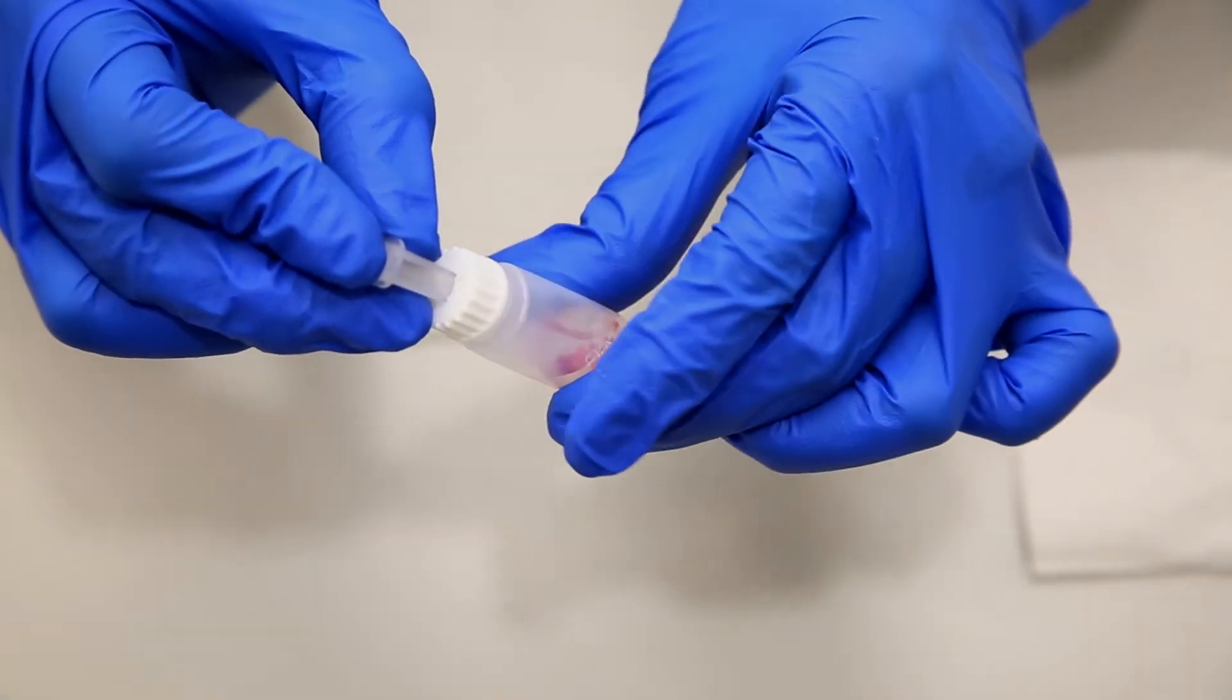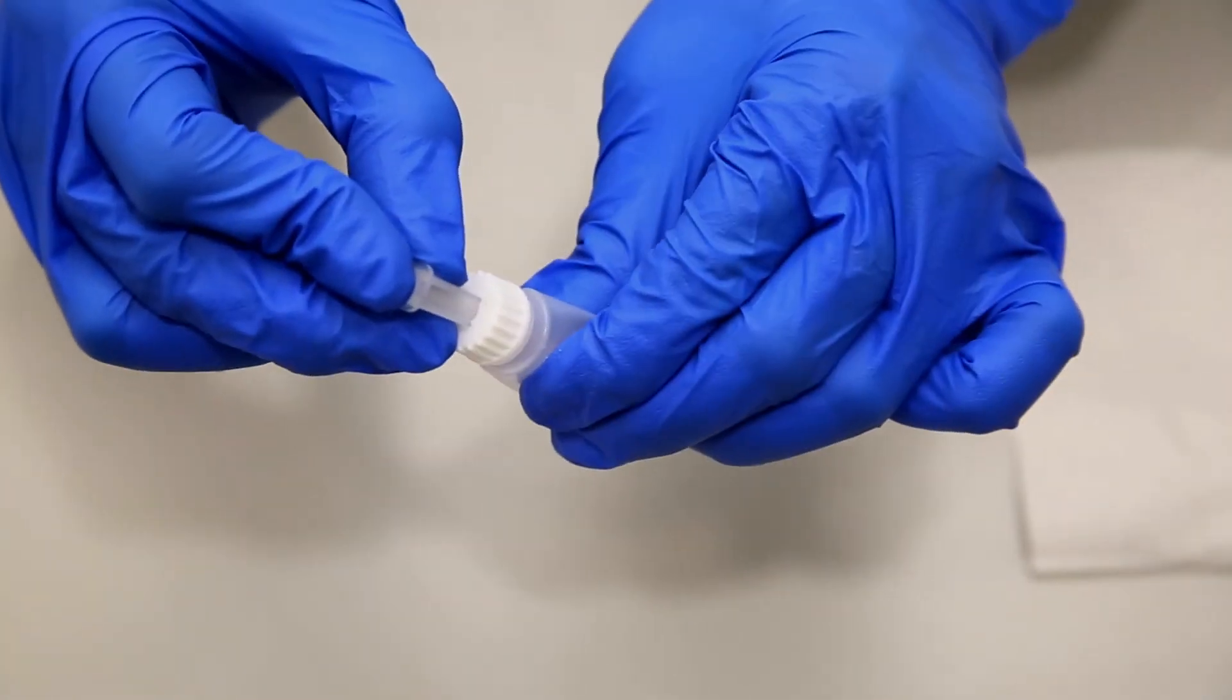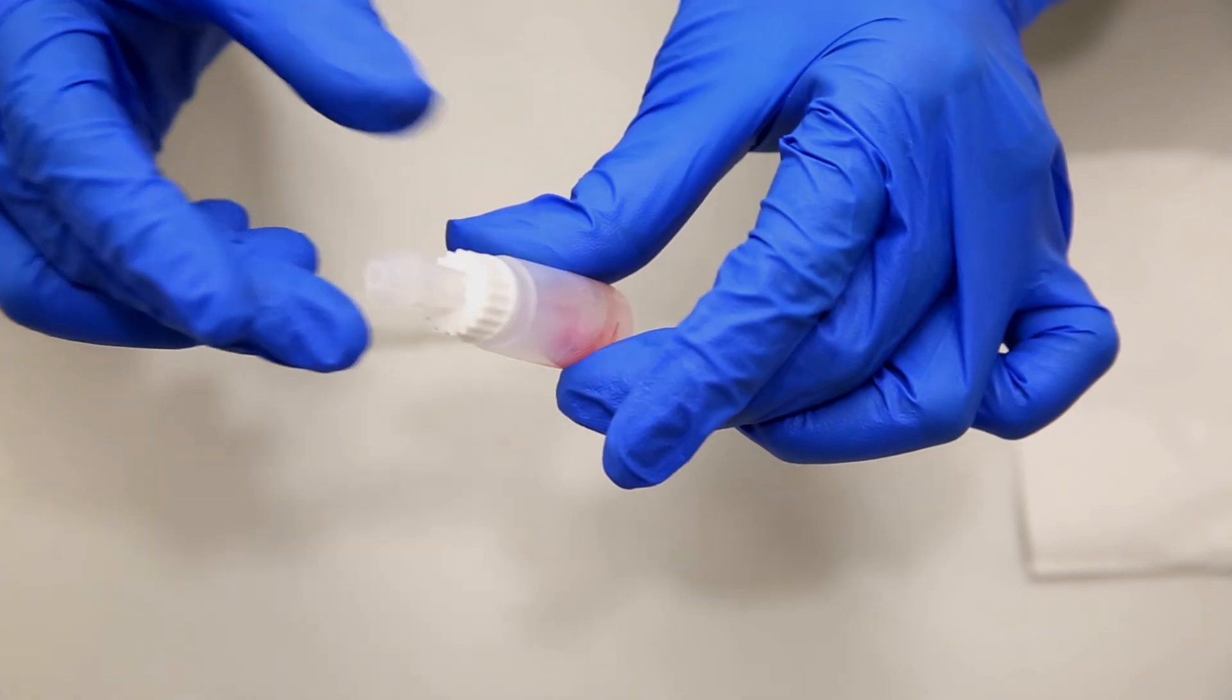Release the pressure on the reservoir and remove your finger from the overflow chamber simultaneously. Negative pressure will draw the blood from the pipet into the diluent reservoir.